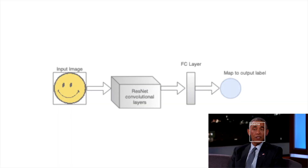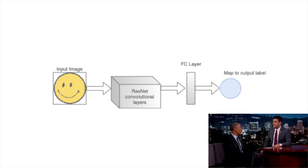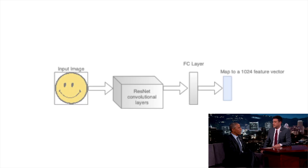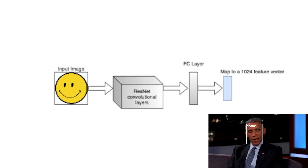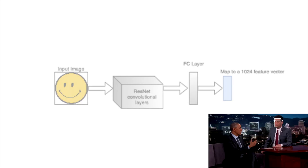The system was at first trained as a classification system to classify an individual in a picture using cross-entropy loss. Afterwards, the last fully connected layer was removed and a new one with 1024 output nodes added. The model was then re-trained using triplet loss.